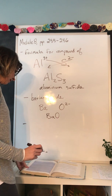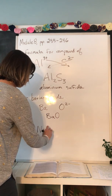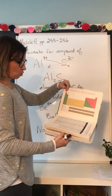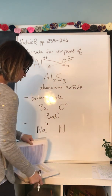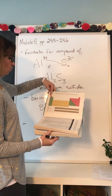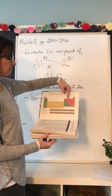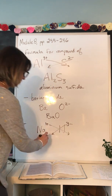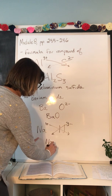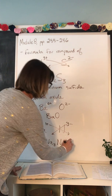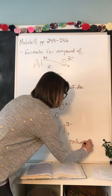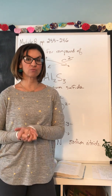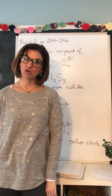The last example: what compound forms between sodium (Na) and nitrogen (N)? Sodium is in column 1A, so it has a 1+ charge. Nitrogen is in column 5A, so it has a 3- charge. Since the values are different, we flip-flop the numbers: the formula is Na₃N. The compound formed is sodium nitride. Make sure you do the reading on your own and bring any questions to class or email me.